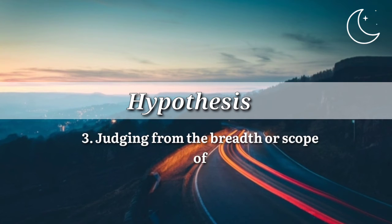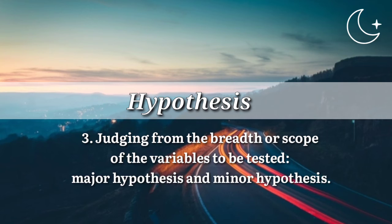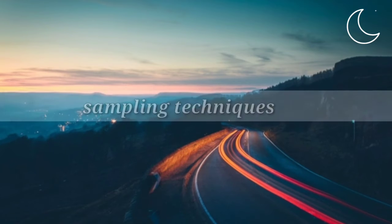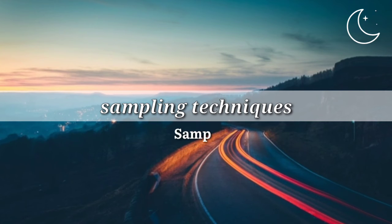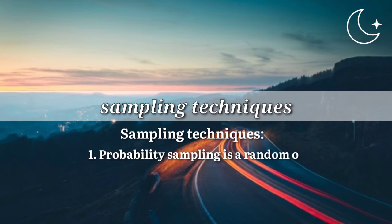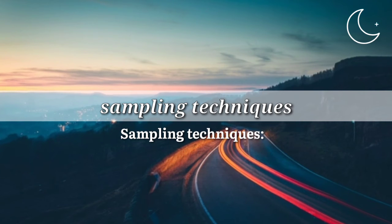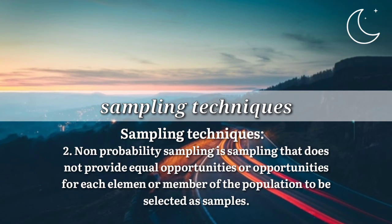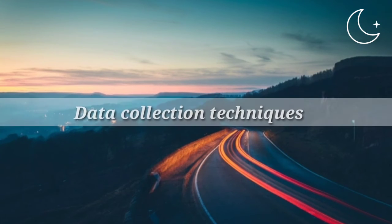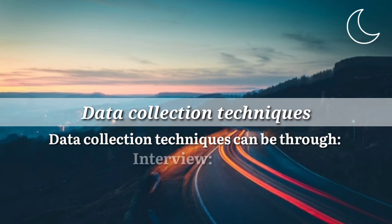Judged by the breadth or scope of the variables to be tested: major hypothesis and minor hypothesis. The sample is part of the population to be studied. Sampling techniques include: one, probability sampling — a random sampling method; and two, non-probability sampling — sampling that does not provide equal opportunities for each element or member of the population to be selected.